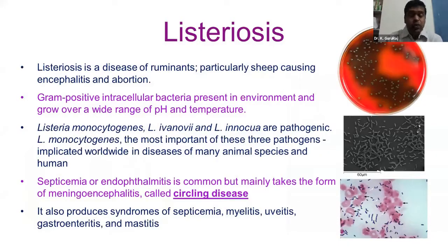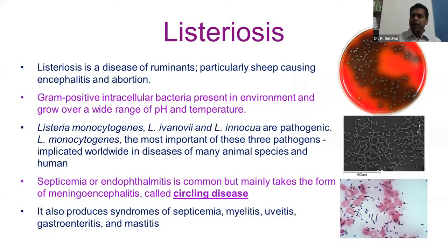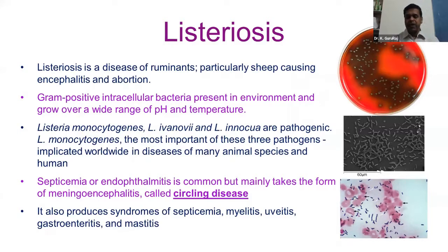Listeriosis is a very important disease of ruminants, especially sheep, causing encephalitis and abortion. Abortion is not the only classical sign — there is a gastroenteric form, a nervous form, and an abortion form. Three different forms are manifested based upon the physiological status of the animal.